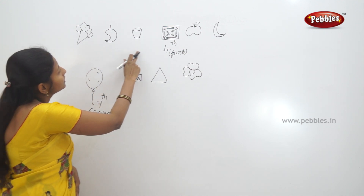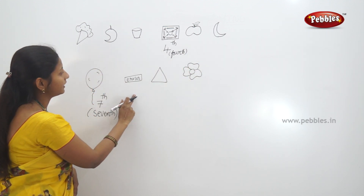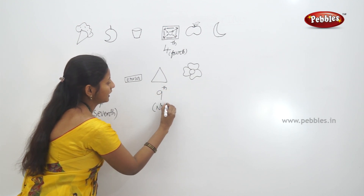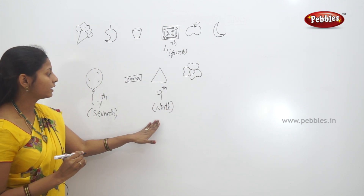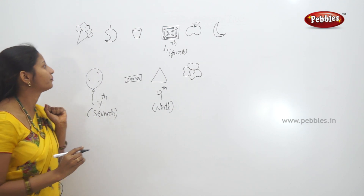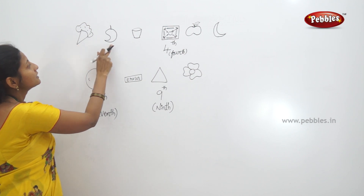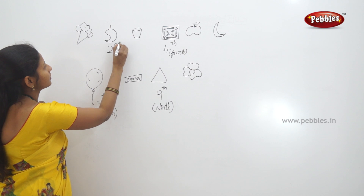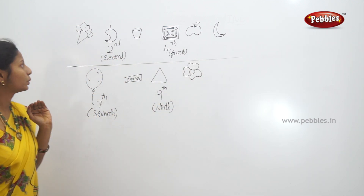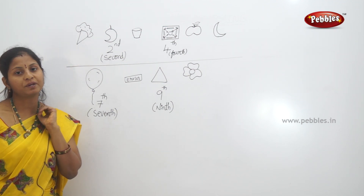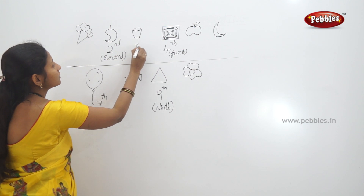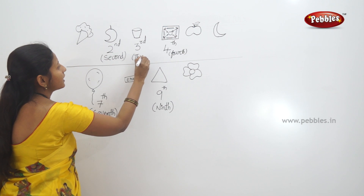Now triangle — what place is it in? One, two, three, four, five, six, seven, eight — ninth place. Triangle is in the ninth place. Spelling: N-I-N-T-H, not N-I-N-E. So triangle is in the ninth position. Mango — favorite fruit — what position is mango in? First, second — mango is in the second place. S-E-C-O-N-D. Now, what picture is in the third place? First, second, third — glass is in the third position. T-H-I-R-D.